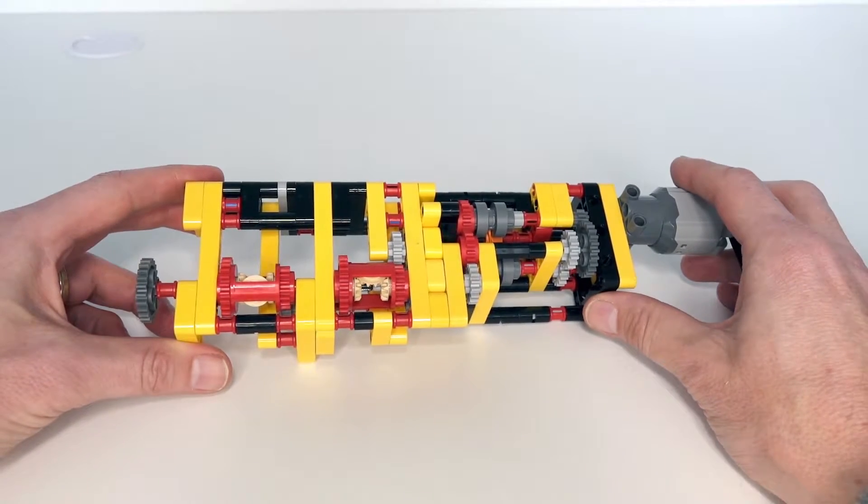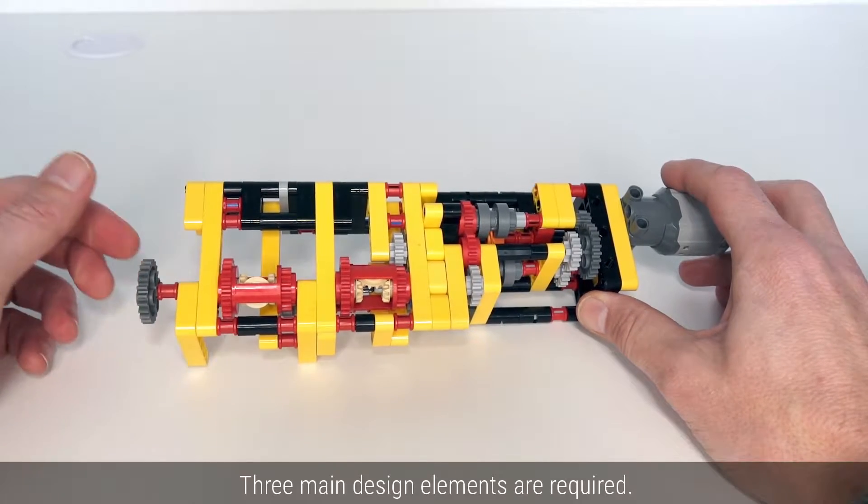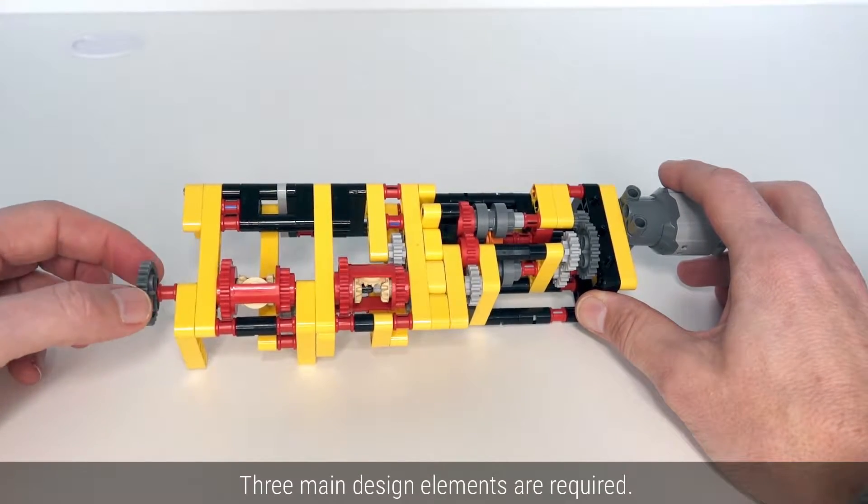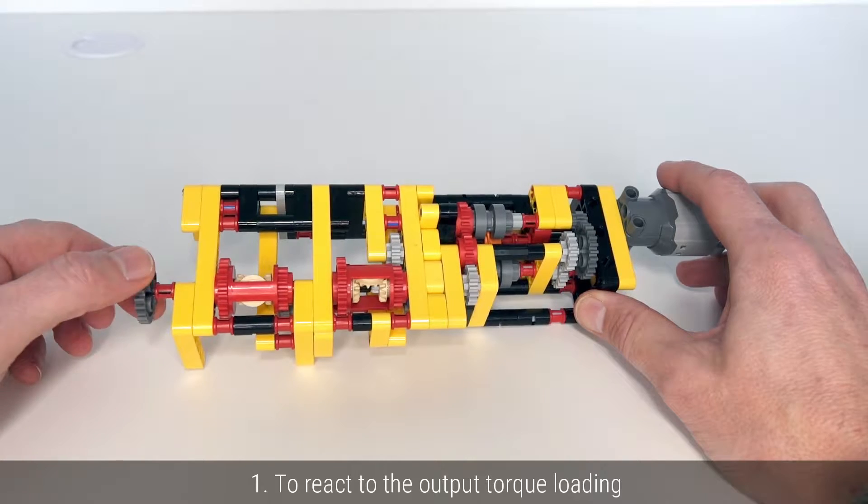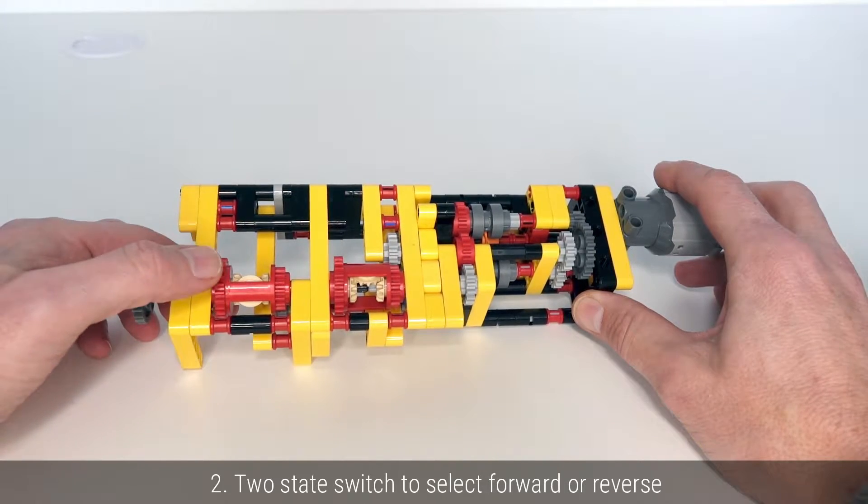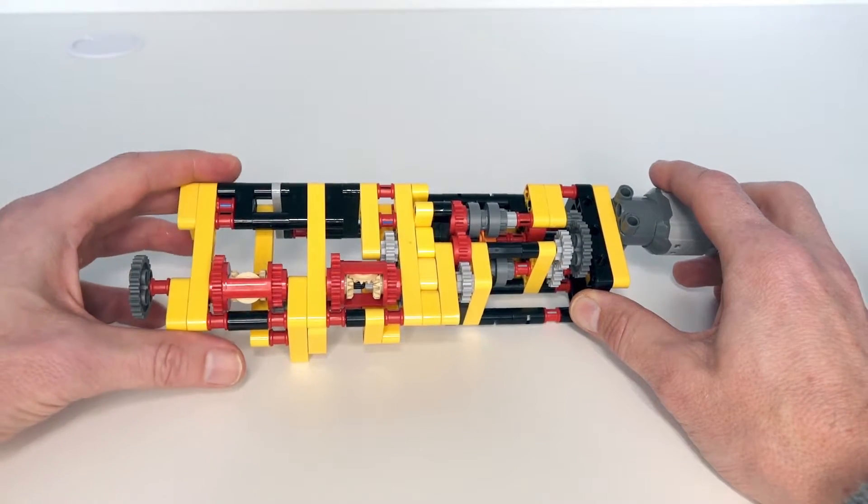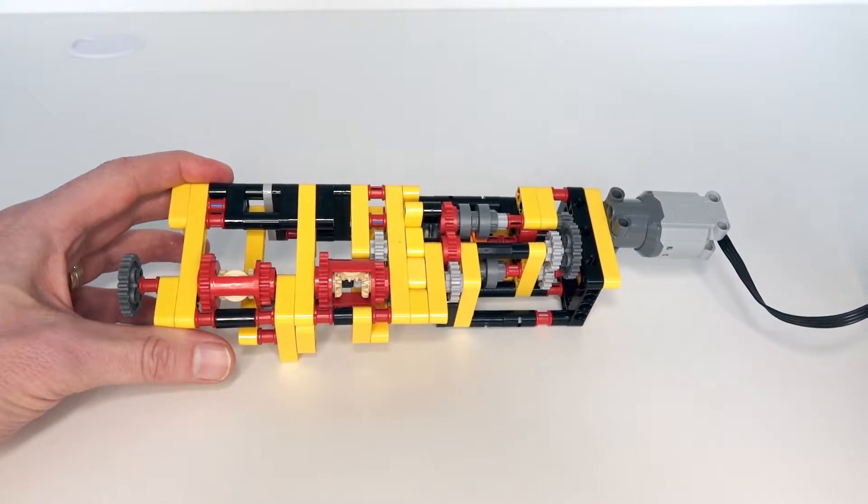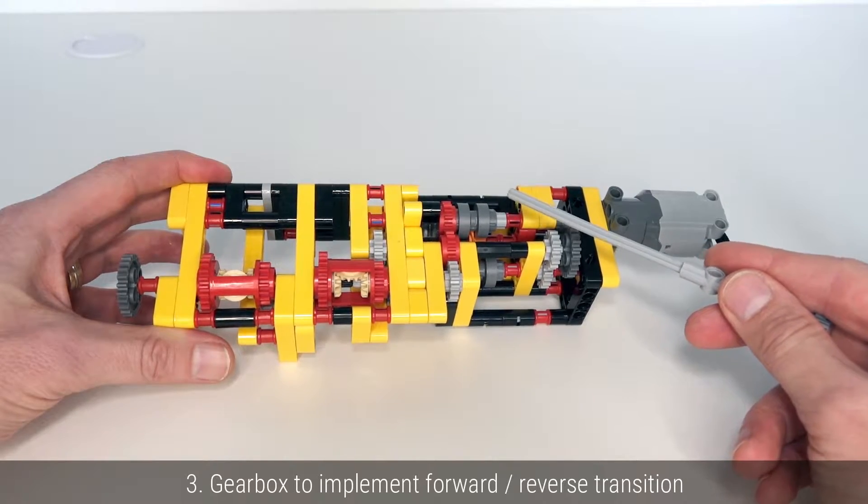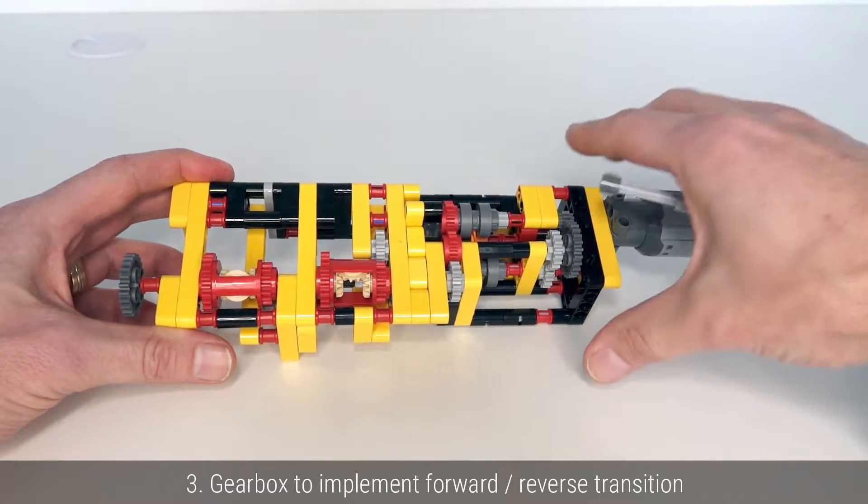In order to design this gearbox, I realized I'd need three main parts. The first part is a mechanism for reacting to the output torque. The other part is a two-state switching mechanism to switch between the forward and reverse states. And finally, some sort of gearbox that would switch the output direction from forward to reverse, depending on that state.